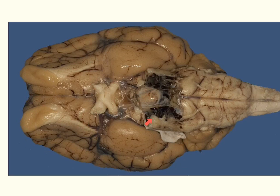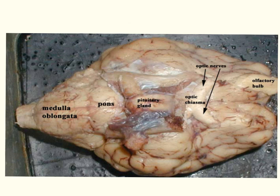So we have the olfactory bulbs, olfactory track, optic track, optic chiasma, and optic nerves. Continuing back, we can see the pituitary gland. On either side of the pituitary gland we can see the cerebral peduncles. Continuing back we will see the abducens nerve, which is cranial nerve 6. Over in this area we'll find the trigeminal nerve, which is cranial nerve 5. This area right here is the medulla oblongata, and continuing down we would have the spinal cord.